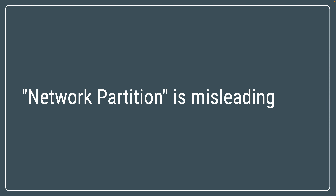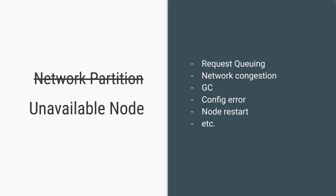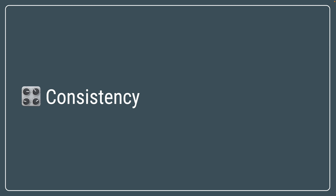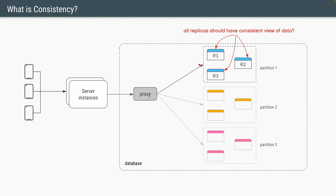In the context of CAP theorem, network partition is a bit misleading. There are multiple other reasons why two nodes may not be able to communicate with each other. So instead of network partition, when you think about CAP theorem, think from the availability of the node itself to process your requests. Now let's understand what consistency means. Since each partition has three copies of data — replicas — consistency should ideally mean all three of them have the same copy of data.